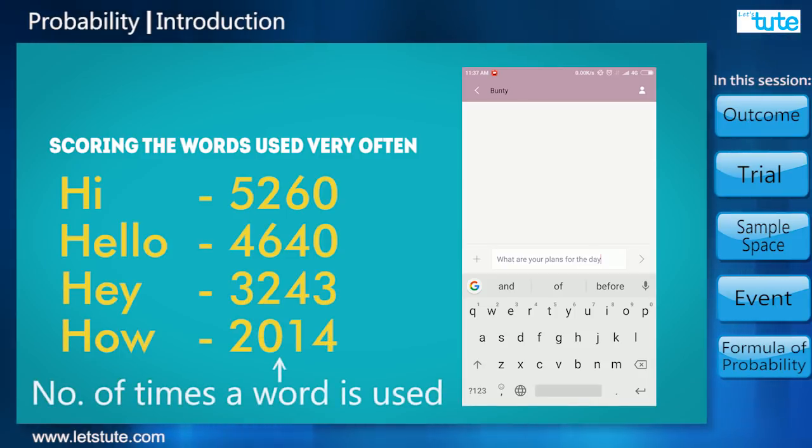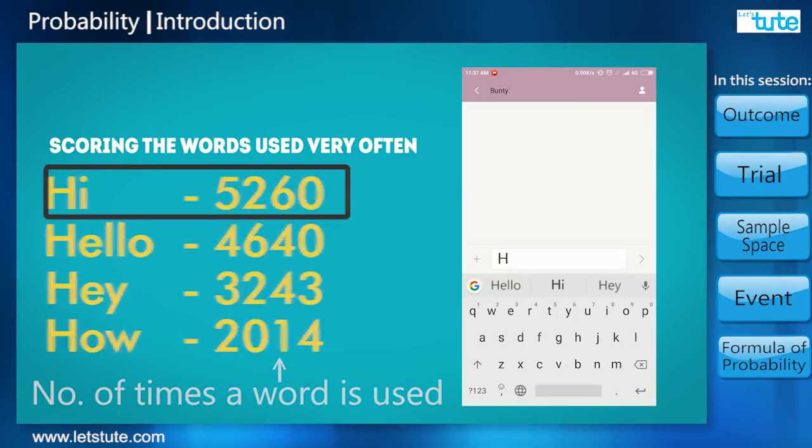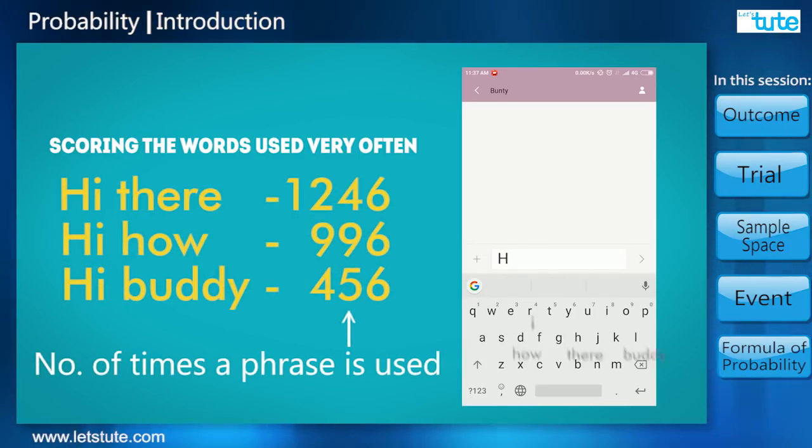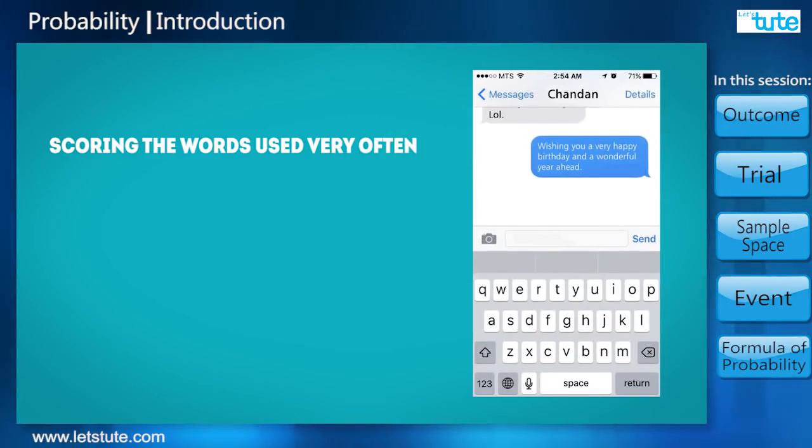Words which we use very often have higher scores. The higher the score, the more are the chances of the use of the word, and so the word is suggested. In fact, it also scores phrases so that it can suggest the words which are used together.